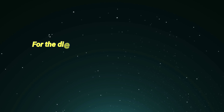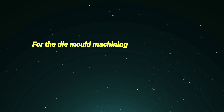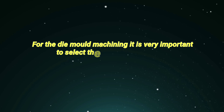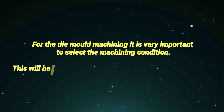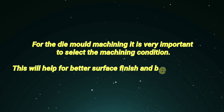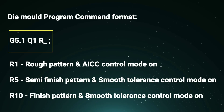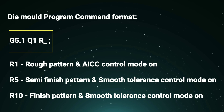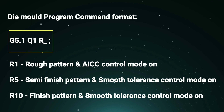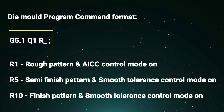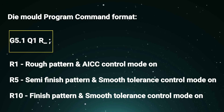For die mold machining, it is very important to select the correct machining condition. This will help achieve better surface finish and better cycle time. We will see the single-line program command format for enabling AI contour control, smooth tolerance control, and machining pattern.